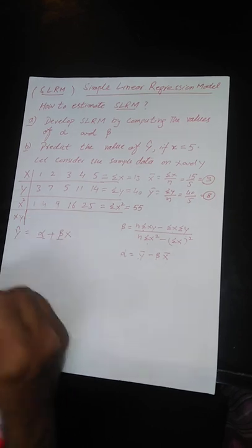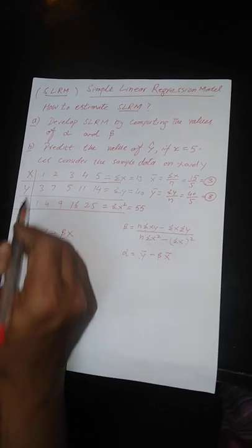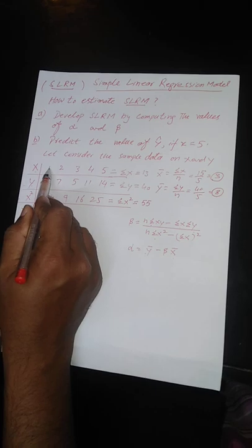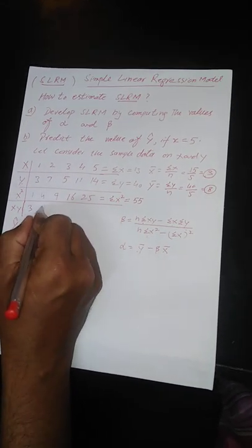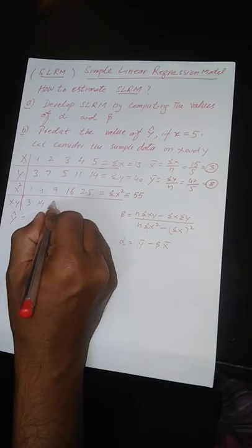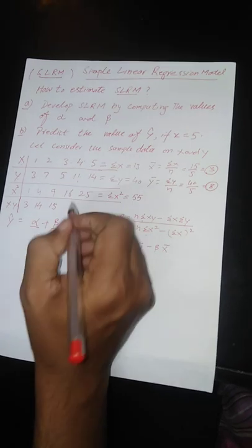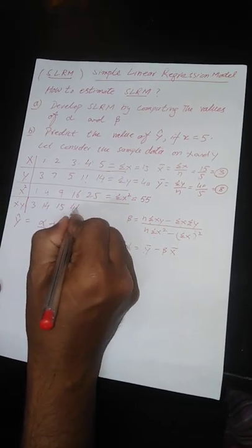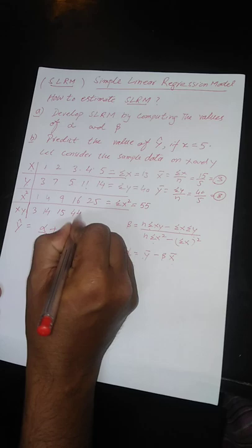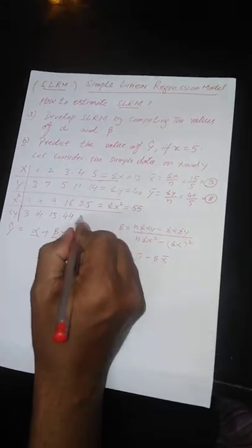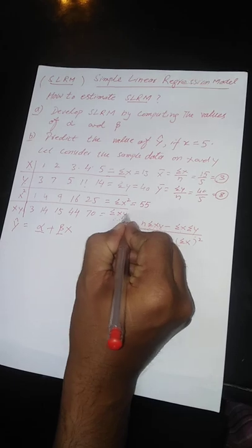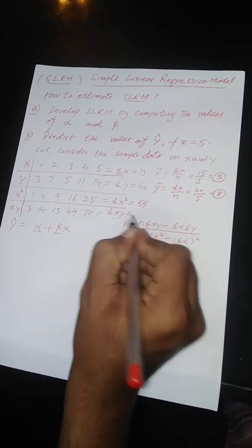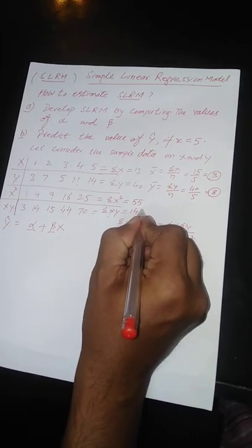The last one is xy. We get xy by multiplying x and y. 1 times 3 is 3, 2 times 7 is 14, 3 times 5 is 15, 4 times 11 is 44, and 5 times 14 is 70.